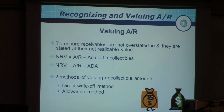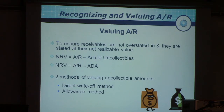NRV is calculated as AR minus the actual uncollectibles, or AR minus ADA. ADA stands for Allowance for Doubtful Accounts — 'doubtful' meaning people you feel are not going to pay. There are two methods: the direct write-off method and the allowance method.